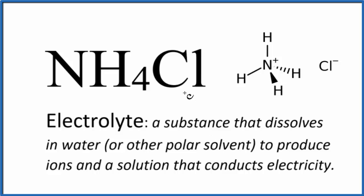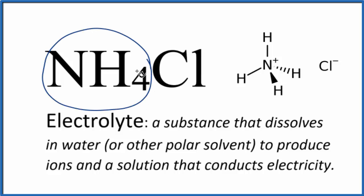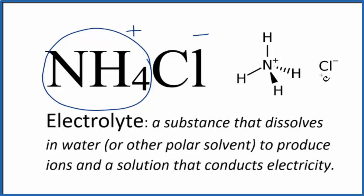The first thing we need to do is determine what type of compound we have here. When you see NH4, this is the ammonium ion — it's a good one to remember. The whole thing has a 1+ ionic charge. Chlorine forms the chloride ion with a 1− ionic charge. So even though these are all non-metals, we have the ammonium ion and the chloride ion, giving us an ionic compound.